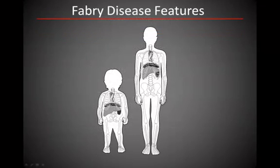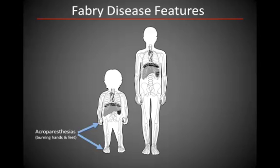The condition typically becomes manifest in later childhood, often with the occurrence of acroparesthesias, causing either pain, burning, or other abnormal sensations of the fingers and toes. Hypohydrosis and hematuria are also early signs of Fabry disease.